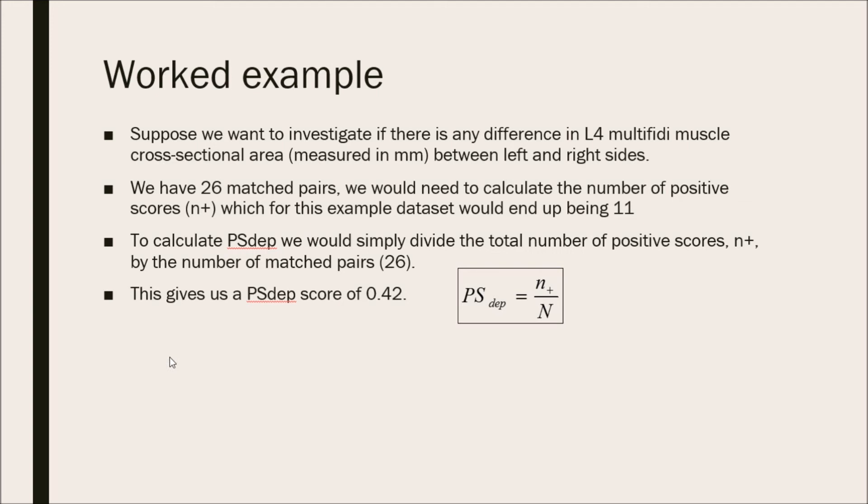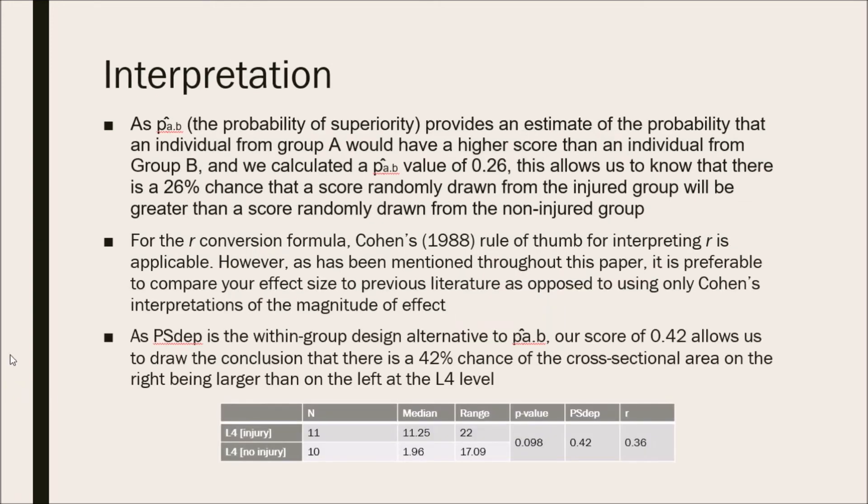Moving on to how to interpret these results. As P̂A.B, which is also known as the probability of superiority, provides an estimate of the probability that an individual from group A would have a higher score than an individual from group B. And we calculated the P̂A.B value of 0.26. This allows us to know that there is a 26% chance that a score randomly drawn from the injured group, group A, will be greater than a score randomly drawn from the non-injured group, group B.